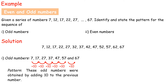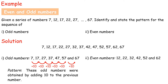The pattern is these odd numbers were obtained by adding ten to the previous number. The even numbers are 12, 22, 32, 42, 52, and 62. The pattern is these even numbers were obtained by adding ten to the previous number.